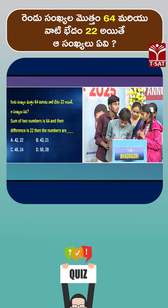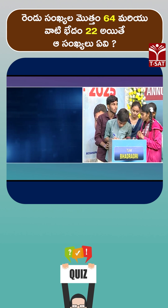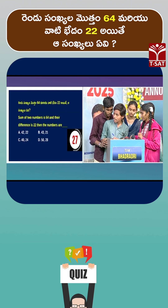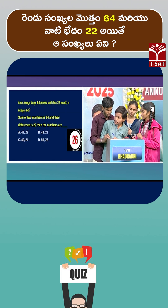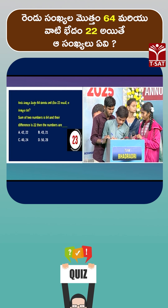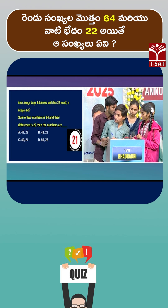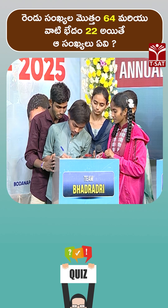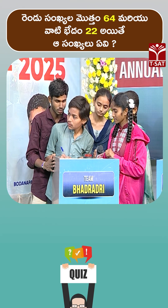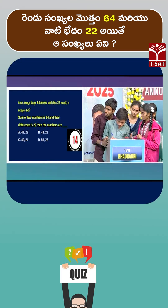Your time starts now! The sum of two numbers is 64 and their difference is 22. Then what are the numbers?